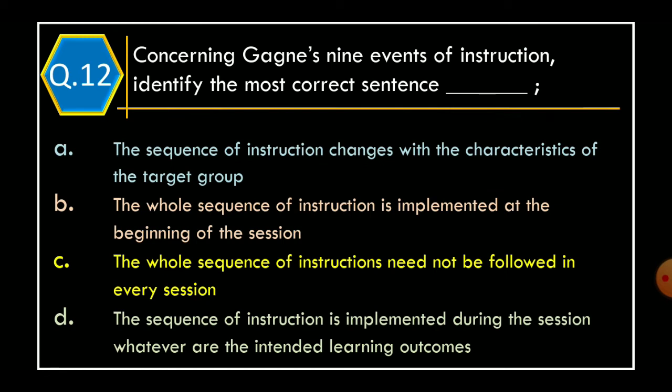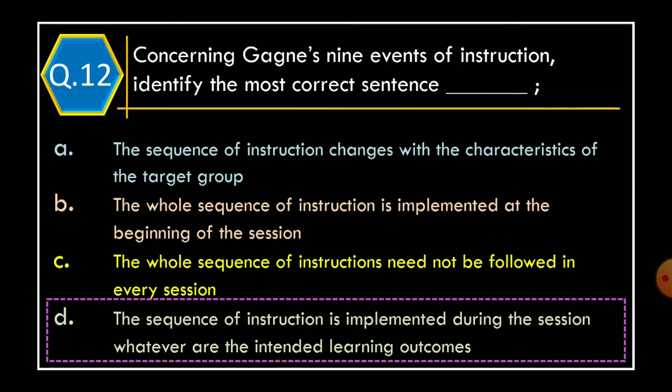Question 12. Concerning Gagné's nine events of instruction, identify the most correct sequence: Option A. The sequence of instruction changes with the characteristic of target group. Option B. The whole sequence of the instruction is implemented at the beginning of the session. Option C. The whole sequence of the instructions need not be followed in every session. Option D. The sequence of instruction is implemented during the session, whatever the intended learning outcomes. The correct option is Option D.